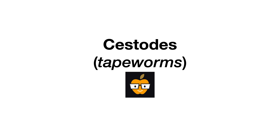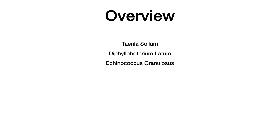Let's talk about the cestodes or the tapeworms. As a brief overview, the three different types of cestodes that you need to know for USMLE and Comlex are Taenia solium, Diphyllobothrium latum, and Echinococcus granulosus. These have a lot of information, but we're going to boil it down to just a couple of high-yield things, because 99% of your board questions are going to hit a certain buzzword. You'll see that buzzword, remember this video, and get the free point.